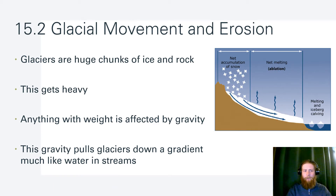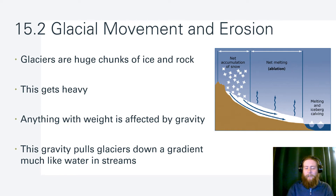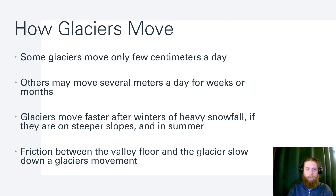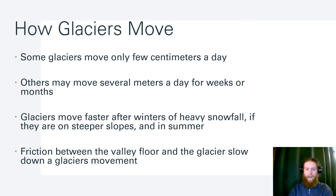So let's talk about glacial movement and erosion. Since these glaciers are huge chunks of ice and rock, they get very heavy and gravity pulls them downhill toward the ocean, much like water in rivers and streams. The steeper the gradient, the faster the glacier; the less steep, the slower. Some glaciers move only a few centimeters a day, while others may move several meters a day for weeks or months. They move faster after really heavy snowfall — more weight means faster movement.